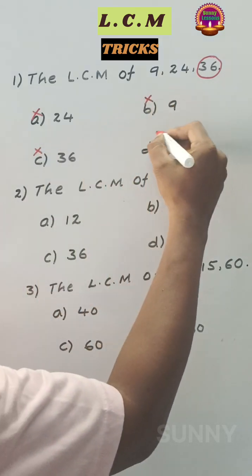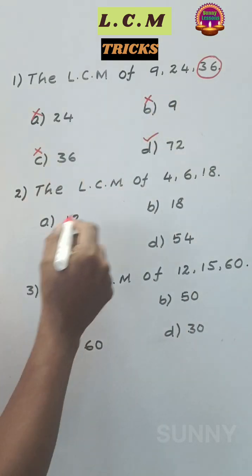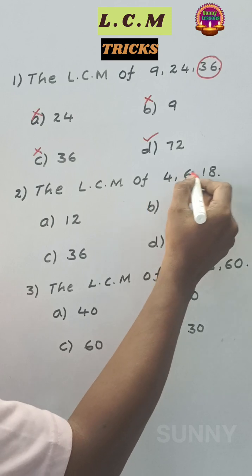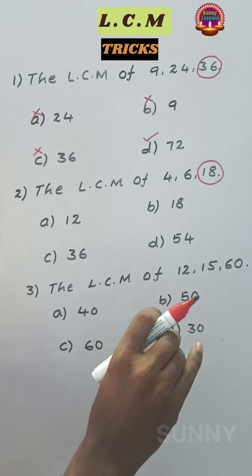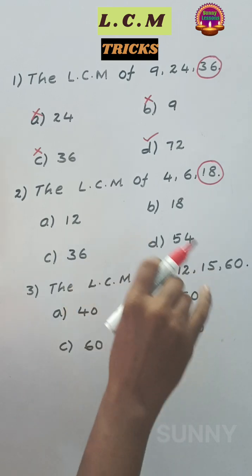So the LCM of 9, 24, 36 is 72. The LCM of 4, 6, and 18. Here among these, 18 is greater. The LCM is either 18 or multiples of 18.